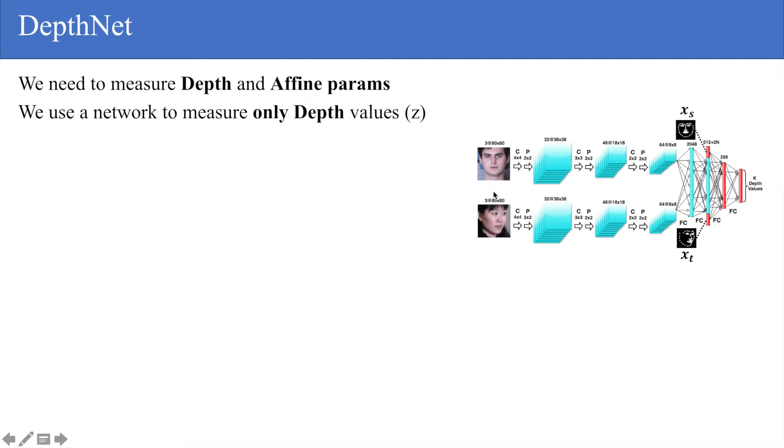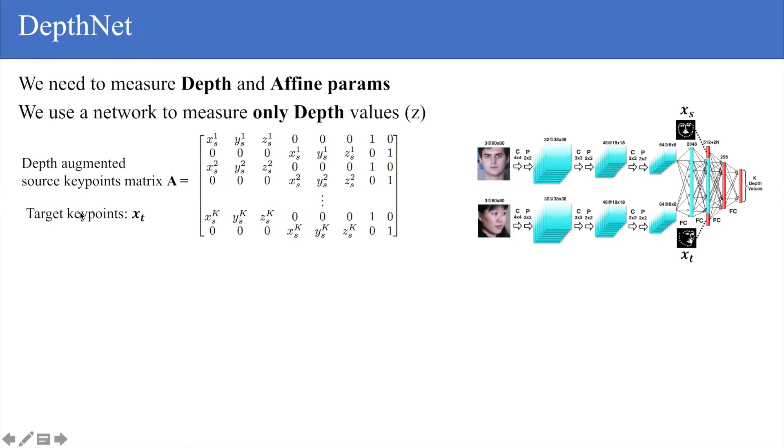What we need to do next is measure the affine parameters. We construct this depth augmented source keypoints matrix, which has the source keypoints and also the predicted depths as shown in this column. If we denote the target keypoints as X subscript T, then we can make this key observation: the affine parameters can be measured in a closed form solution consisting of the source and target keypoints, computed as shown here.